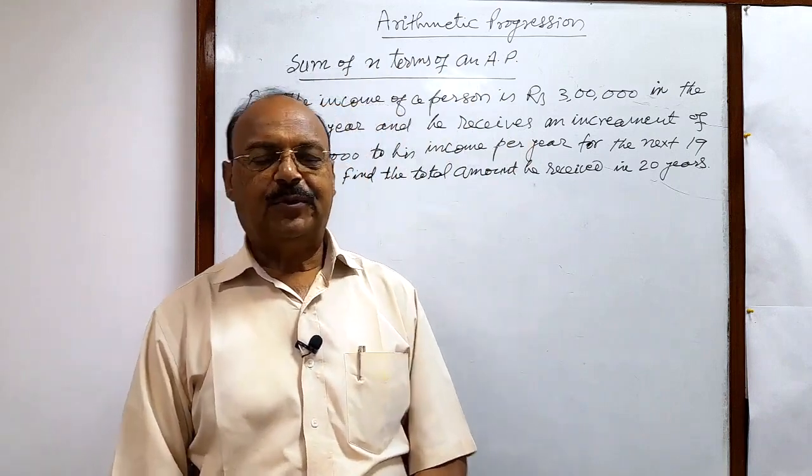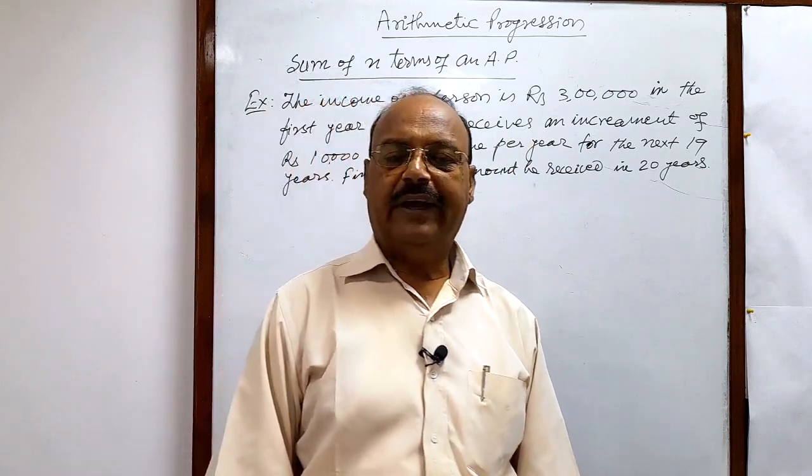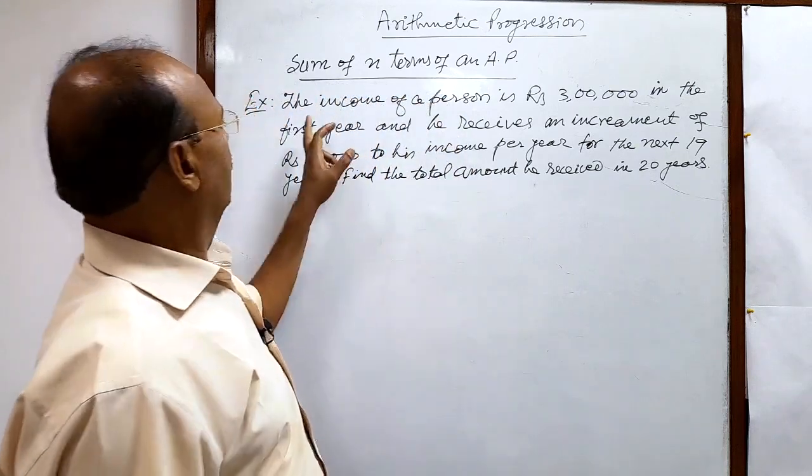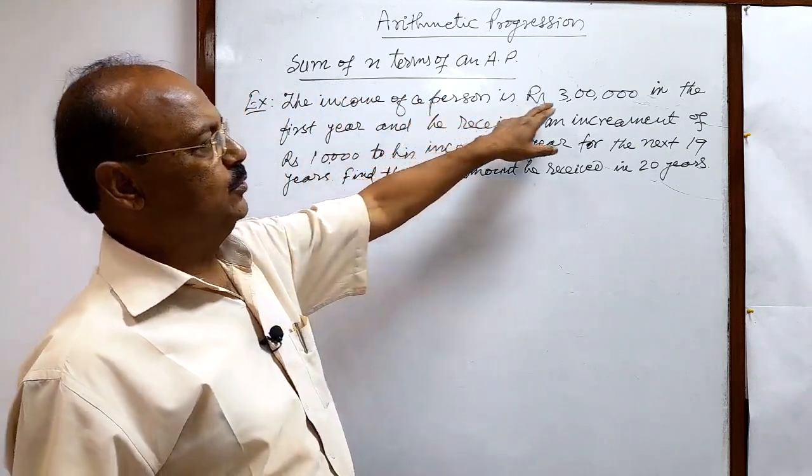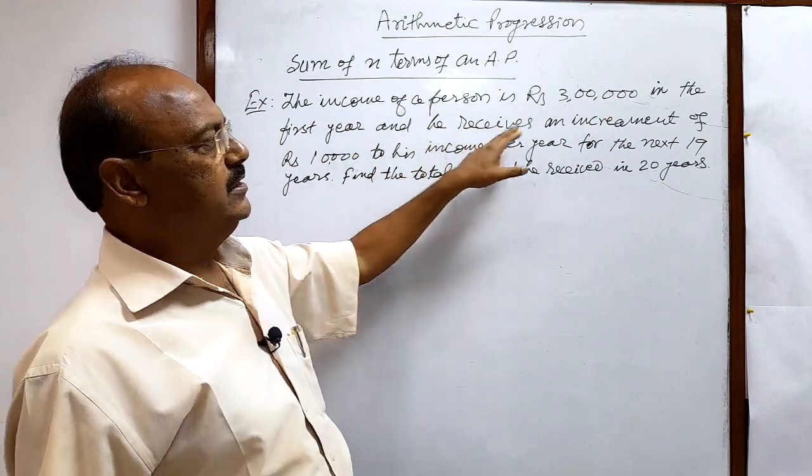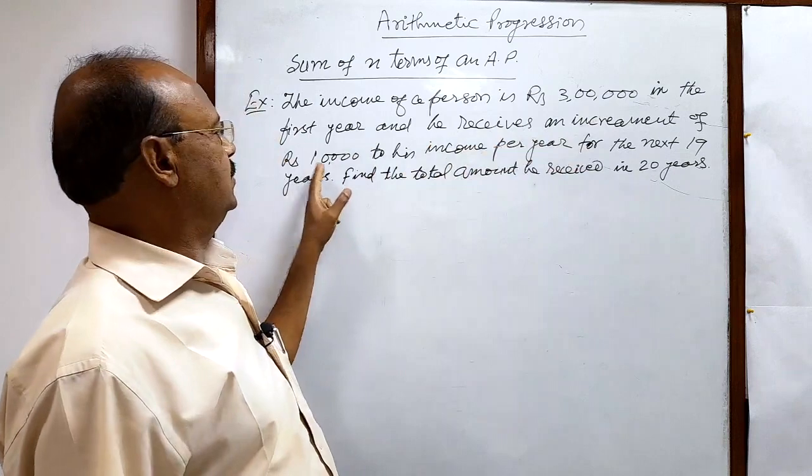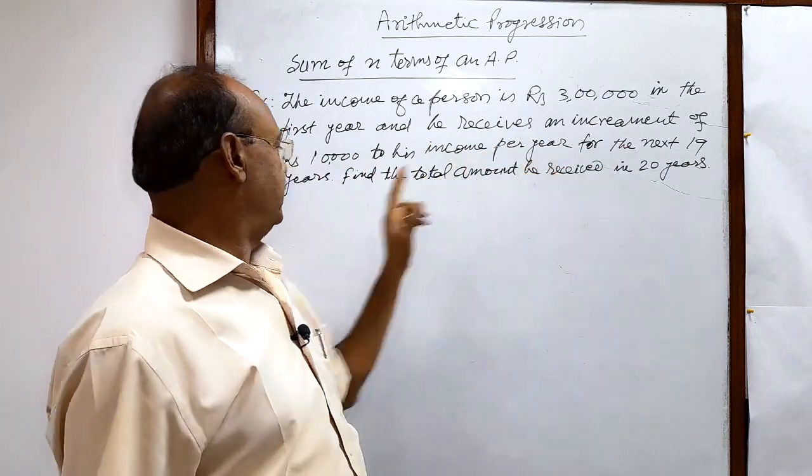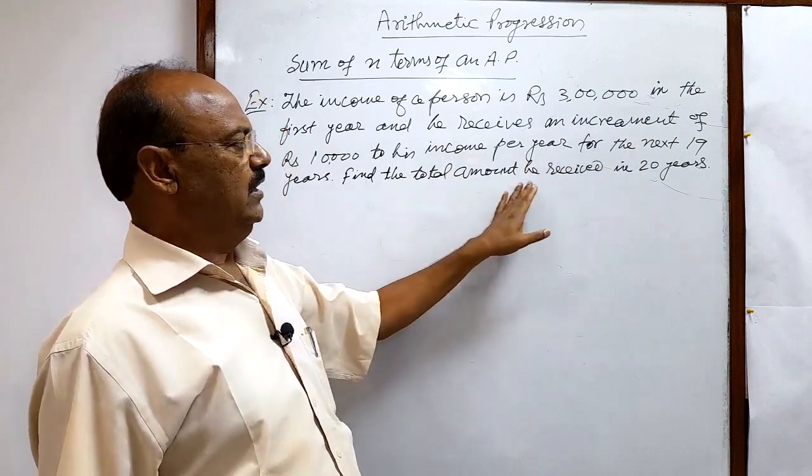Here we are going to solve a problem from the topic sum of n terms of arithmetic progression. The question is: the income of a person is rupees 3 lakhs in the first year and he receives an increment of rupees 10,000 to his income per year for the next 19 years. Find the total amount he received in 20 years.